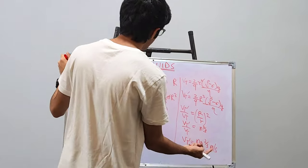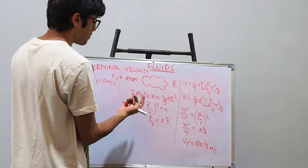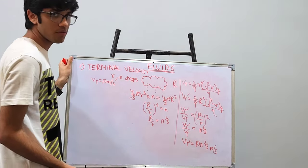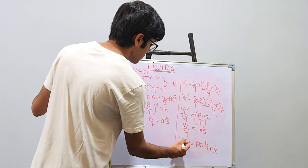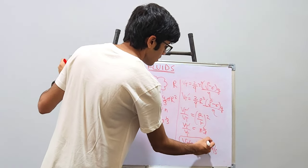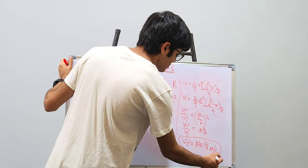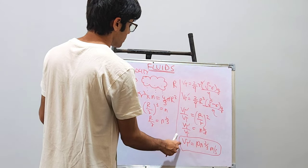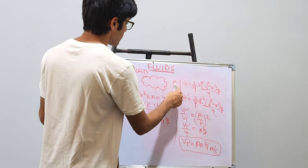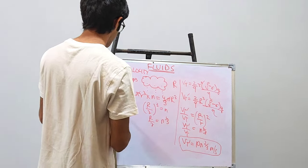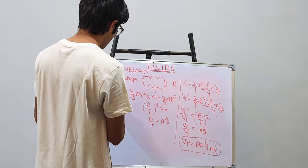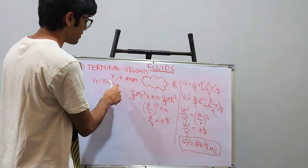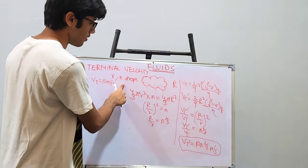Here n can be any number of droplets — whether it is 2, 3, 4, or 5. So from here we get the formula for calculating the terminal velocity of one big raindrop when the terminal velocity of one small raindrop is 10 m/s and there are n small raindrops.